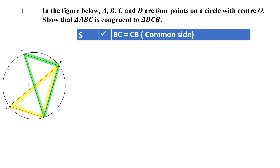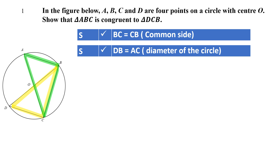First of all, BC is equal to CB — in both triangles they share a common side. Since O is the center of the circle, AOC will be the diameter, and likewise DOB will be the diameter. So the length of the diameter must be the same. Therefore DB is equal to AC, since both of them represent the diameter of the circle.